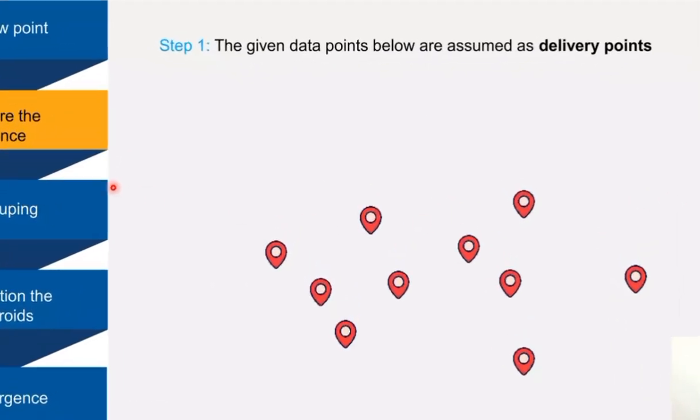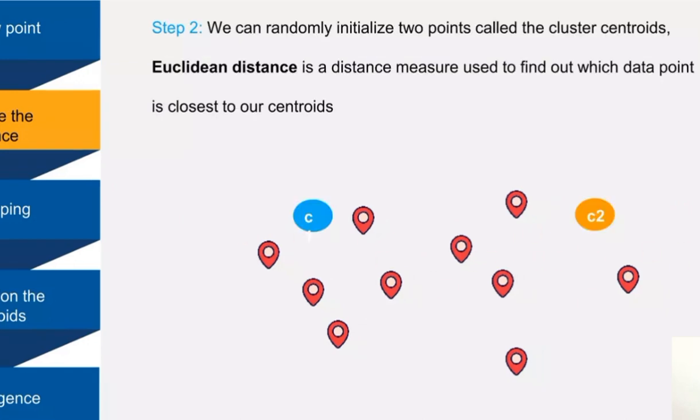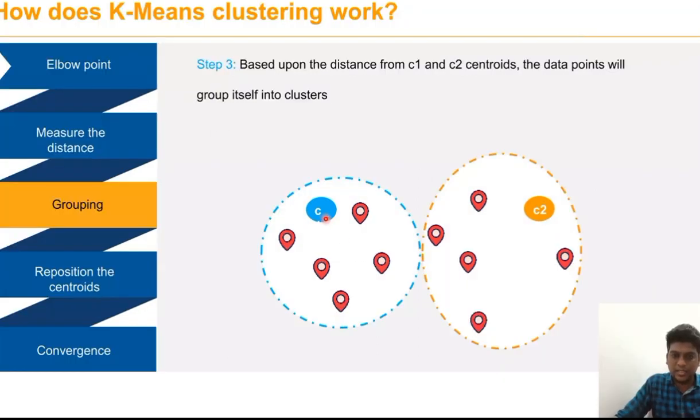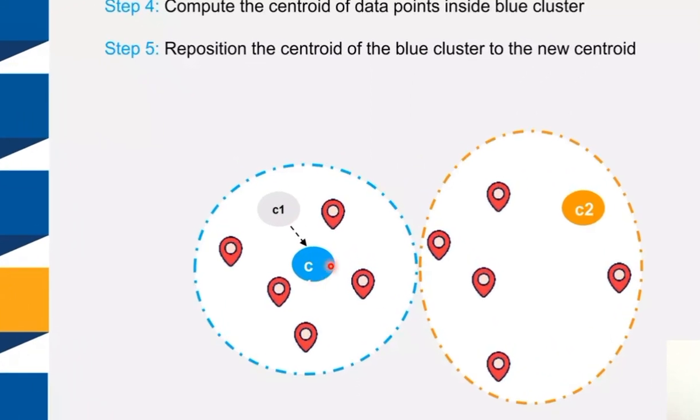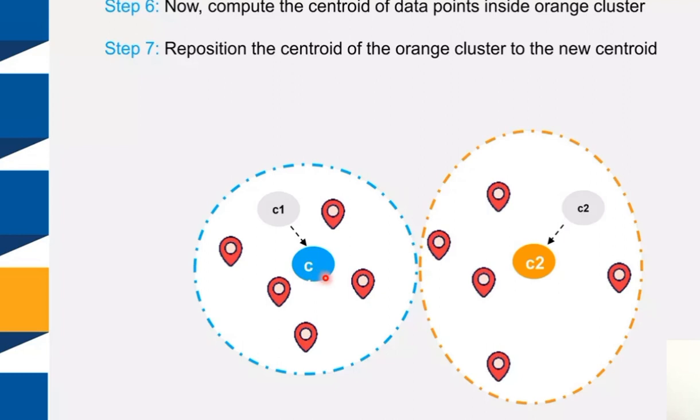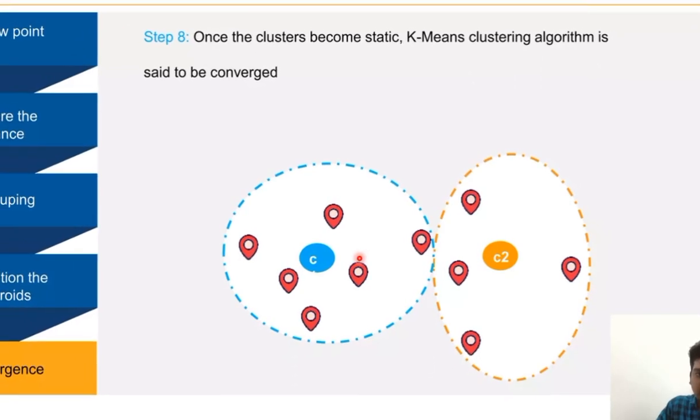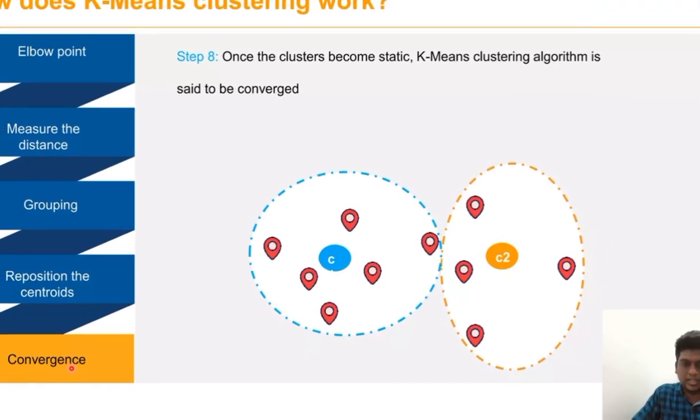Now we have to measure the distance for the delivery points. With the help of Euclidean distance we measure the distance to find out which data point is closer to our centroid. Based on the distance from centroid C1 and C2 we have formed two clusters. Some data points assign themselves to cluster 1, some to cluster 2. Now we have to reposition the centroid for each cluster. When the value of this cluster becomes static, this algorithm is said to be converged.